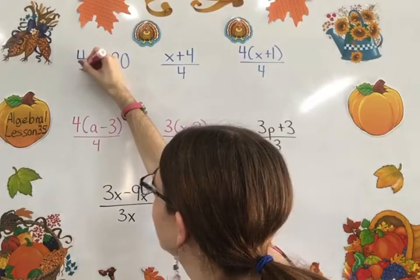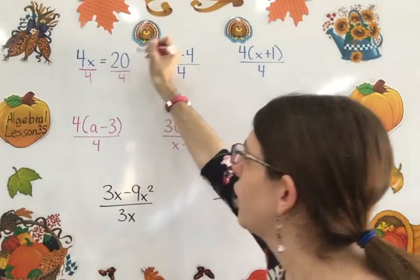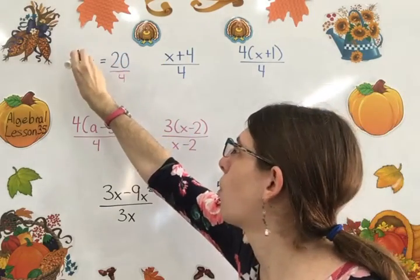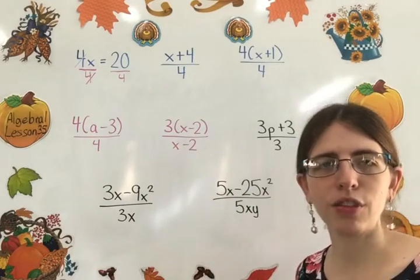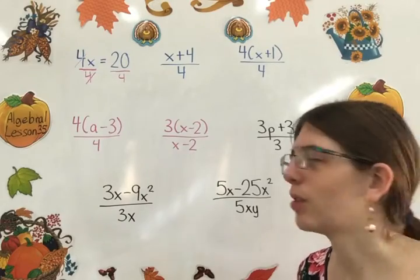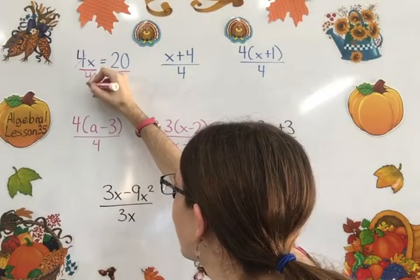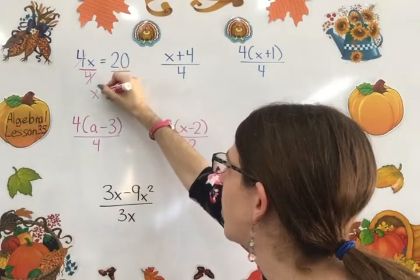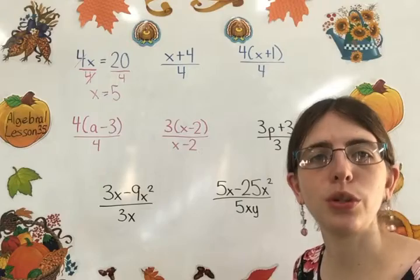And so that cancels out our 4. You could also say it reduces the 4 to a 1, which sometimes can be helpful so that you're not confused thinking that the 4 becomes a 0. It actually becomes a 1. So it reduces to a 1, or it factors out. And you're left with x on this side, and 20 divided by 4 is 5. And that's something that we're used to doing.